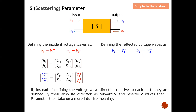Instead of defining the voltage wave direction (a1, a2, b1, b2) relative to each port, they are now defined by their absolute direction. When the wave is forward, we denote it as b+, and when the wave is reflected, we denote it as b−. This gives S parameters a more intuitive meaning: b1+ is an incident wave at port one, b2+ is an incident wave at port two, b1− is a reflected wave at port one, and b2− is a reflected wave at port two.